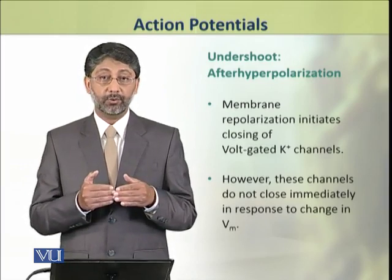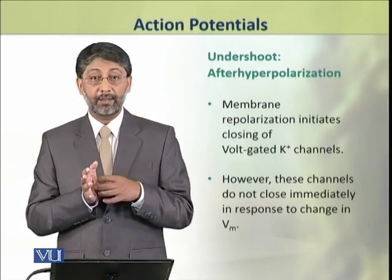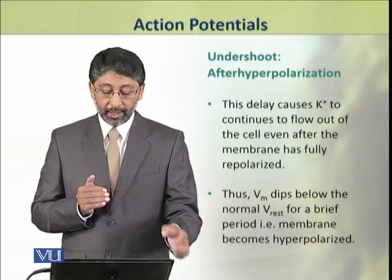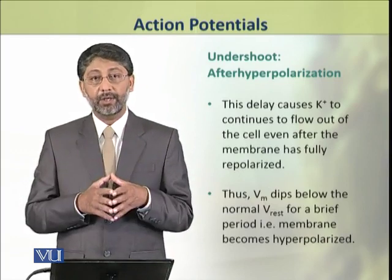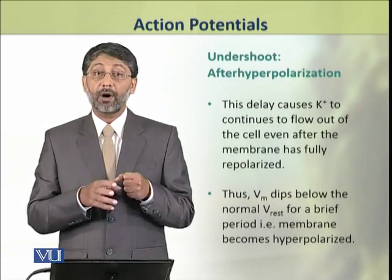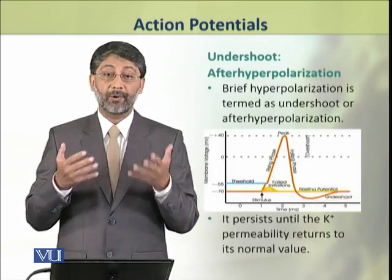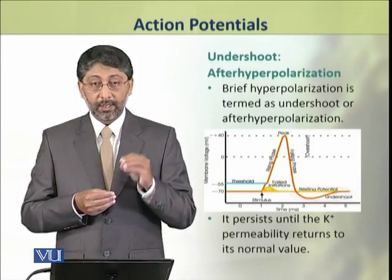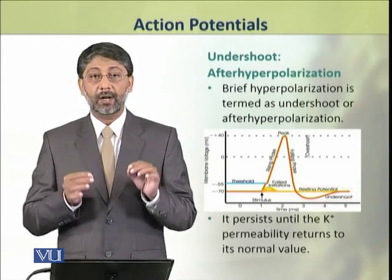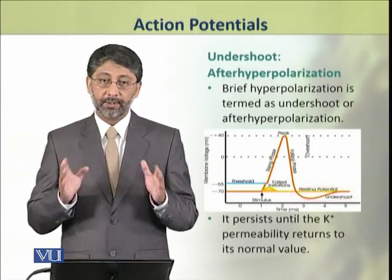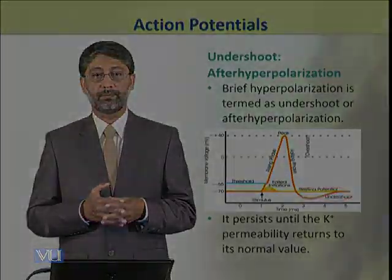The process slows down, but potassium channels are delayed rectifiers — they close slowly. As a result, potassium ions continue to outflow and the membrane potential dips below the normal resting membrane potential, meaning the membrane becomes hyperpolarized. This brief hyperpolarization is known as undershoot or after-hyperpolarization, and it persists until potassium permeability returns to its normal value.